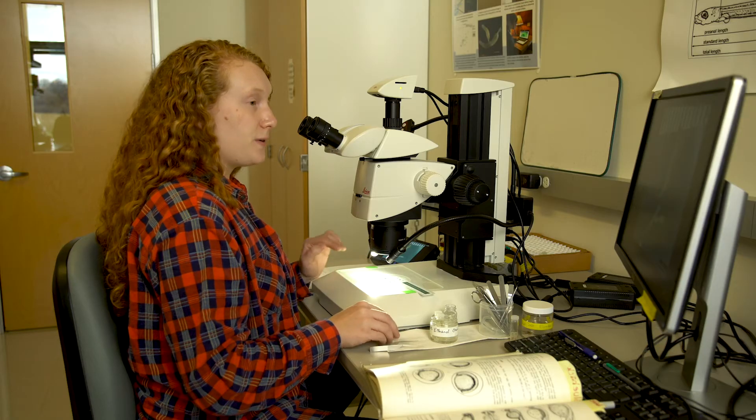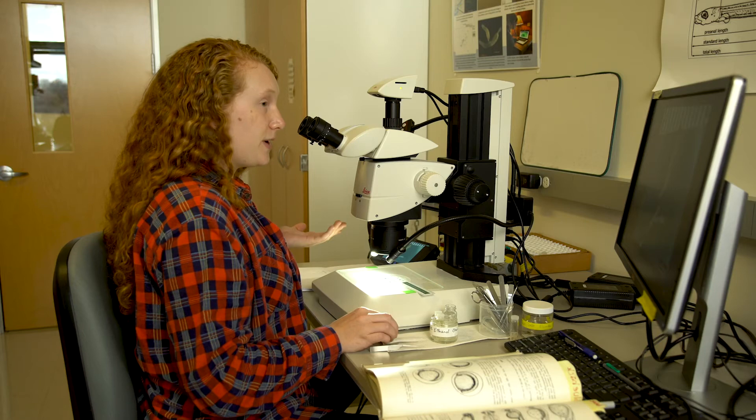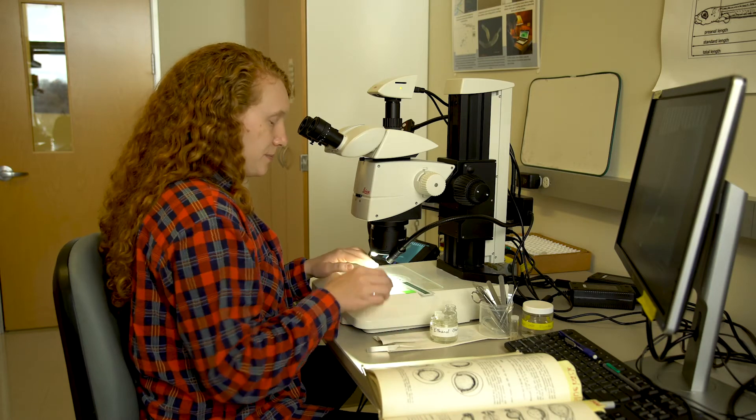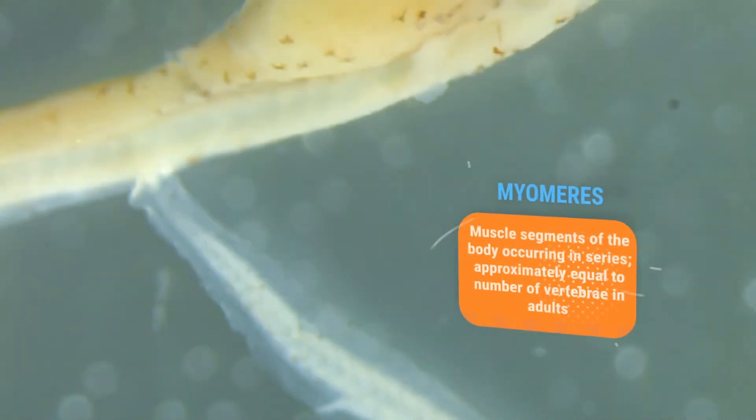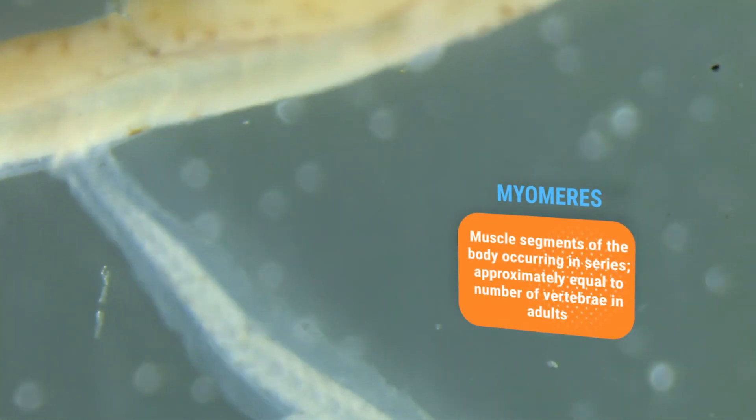So once you have the vent located and you can identify to family, then we can go a little more specific. We can start with myomeres. Myomeres are your second most important identifier. A myomere is a V-shaped muscle fiber. It's what makes up your muscles. And because these fish are so small, it is their muscles.